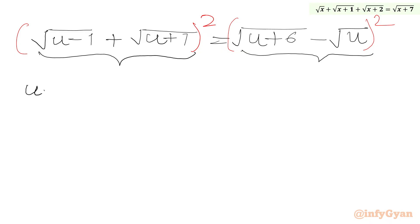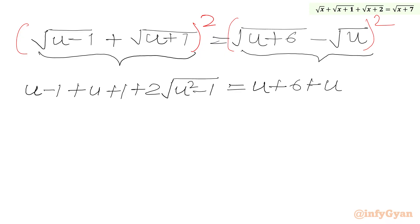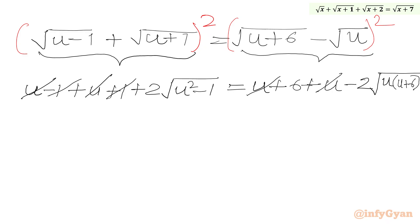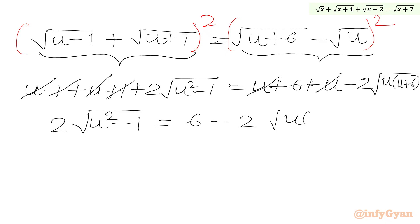Expanding: (√(u-1))² gives u-1, (√(u+1))² gives u+1, and the cross term is 2√(u-1)·√(u+1) which equals 2√(u²-1) using the difference of two squares. On the RHS we get (u+6) + u minus 2√(u·(u+6)). The plus 1 and minus 1 cancel, and u + u = 2u on both sides, so subtracting 2u from both sides leaves 2√(u²-1) = 6 - 2√(u(u+6)).